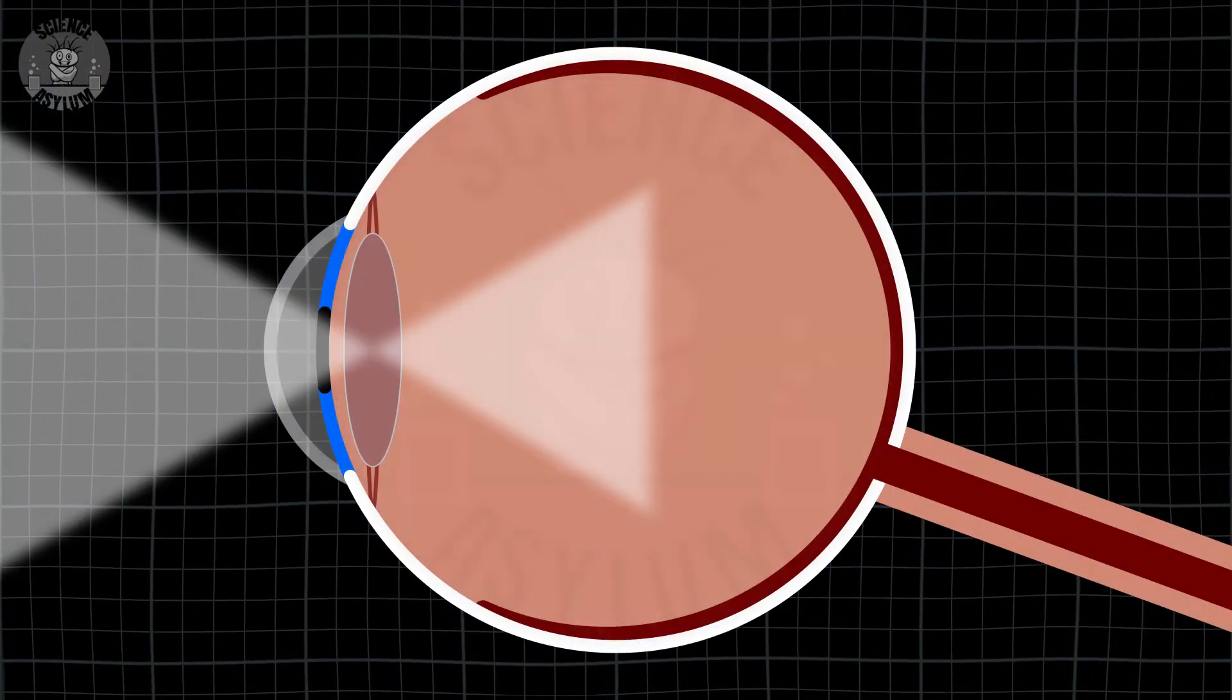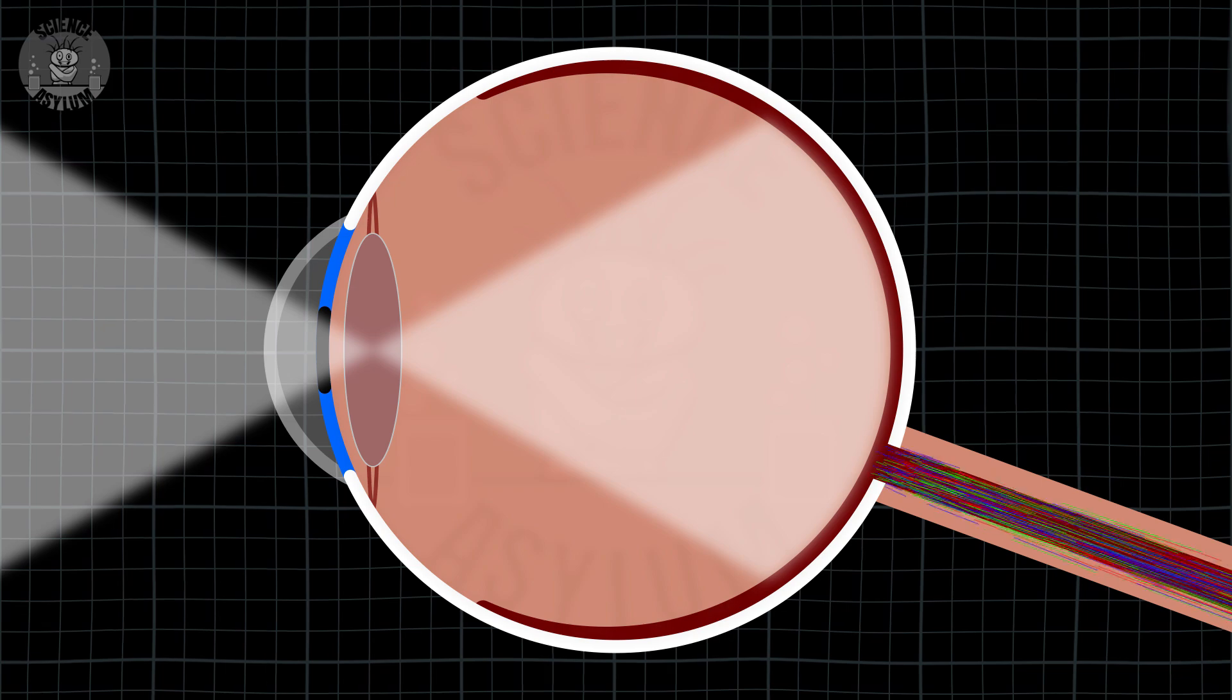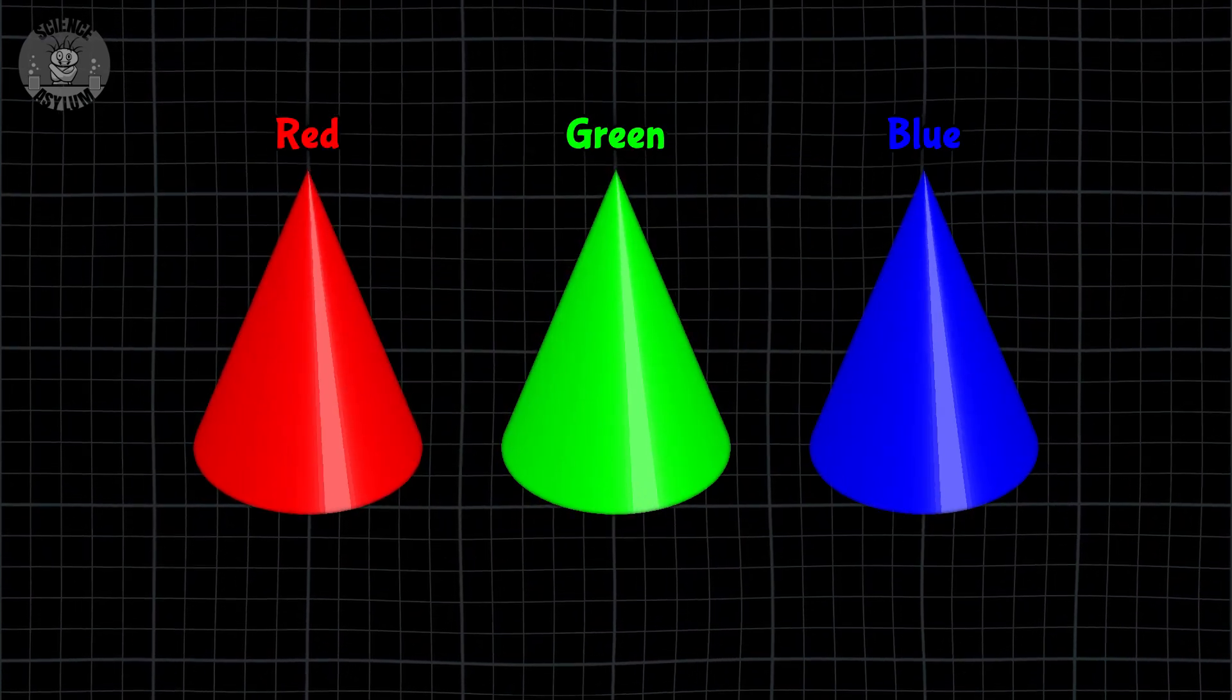Light hits the cones and a chemical process sends a signal to the brain. That signal contains information about color because there are three different types of cones. Red, green, and blue.